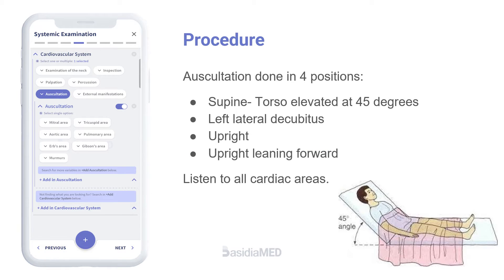The examiner should perform auscultation in four positions: supine, left lateral decubitus, upright, and upright-leaning forward, listening to all cardiac areas. It should start with the supine position, with the torso elevated to 45 degrees.